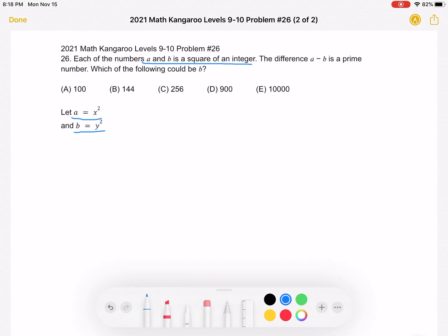So now let's try to interpret what this information tells us. We have A minus B is a prime number. So we can rewrite A minus B as being equal to x squared minus y squared,